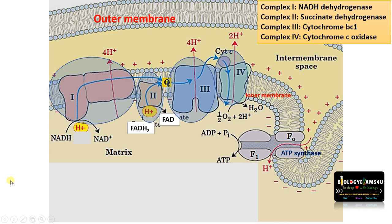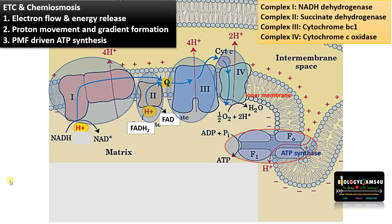The three processes happening in the electron transport chain are: electron flow and energy release, proton movement and gradient formation, and proton motive force driven ATP synthesis.